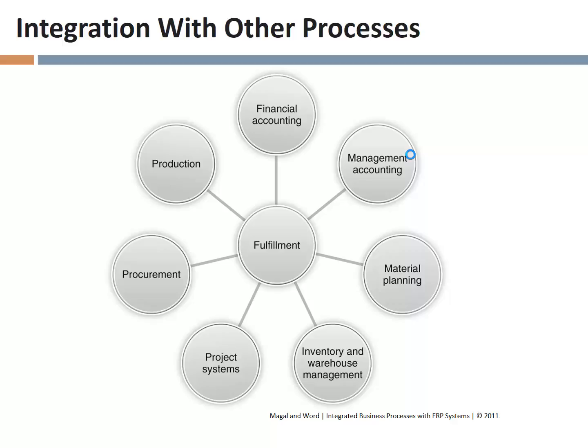What is the point of interaction between the fulfillment process and the material planning process? When we think about when we will have the stuff available — what we call the available-to-promise check, or ATP — that is exactly a point of interaction between fulfillment and material planning. There are two other things closely related to that which are also points of interaction.